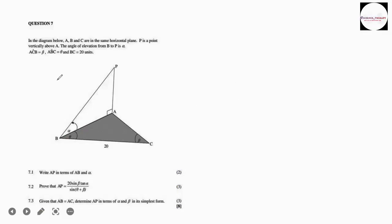Okay, so we are given question 7. It says in the diagram below A, B, and C are in the same horizontal plane. P is a point vertically above A, the angle of elevation from B to P is alpha, and then ACB is beta, ABC is theta, and BC is 20 units. So basically everything has been indicated here on the diagram. Now, remember, we are trying to write AP in terms of AB and alpha.